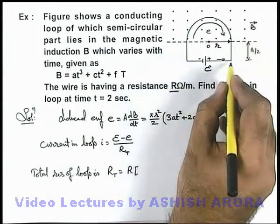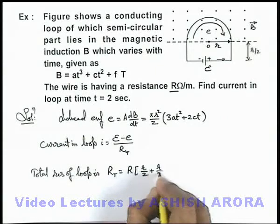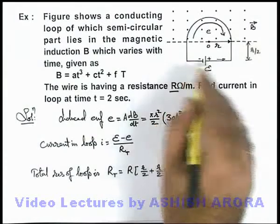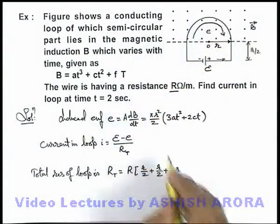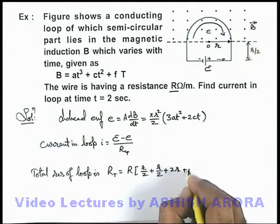This length here it is r/2, so it is r/2 + r/2 + this 2r is the diametrical length and it is semicircular part, we can use as πr.